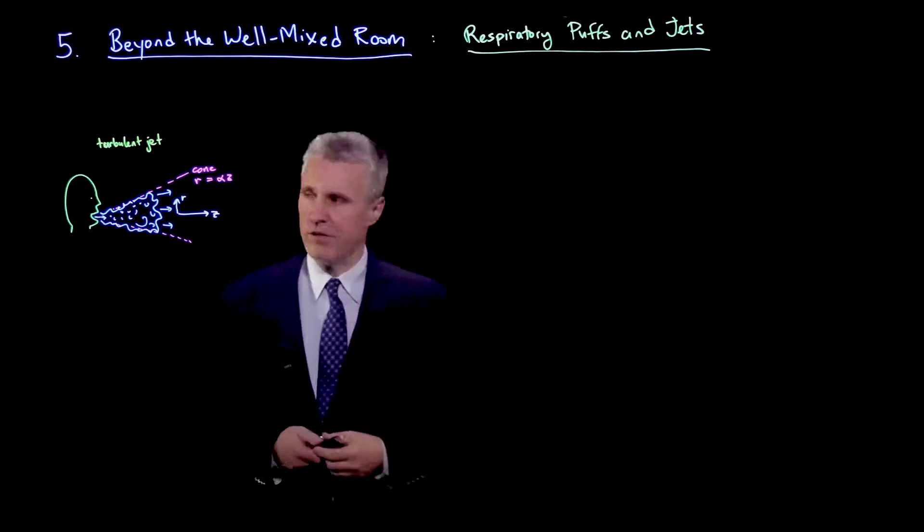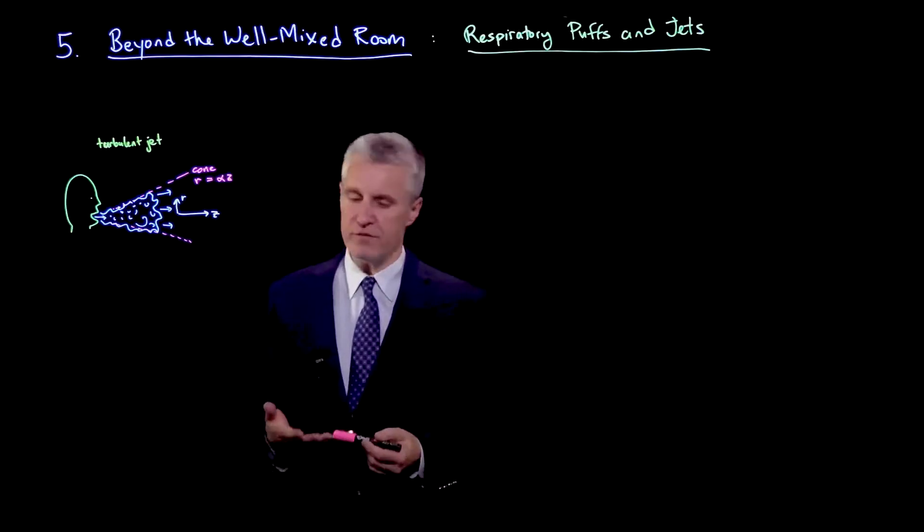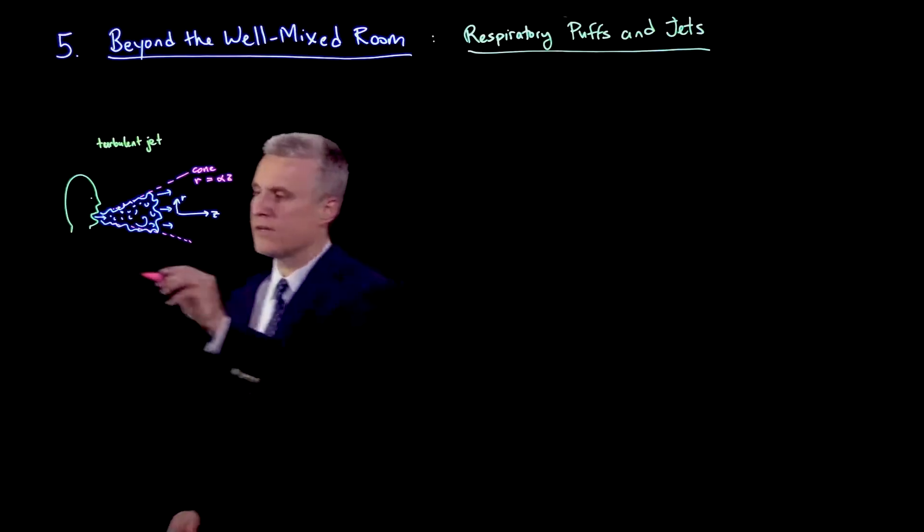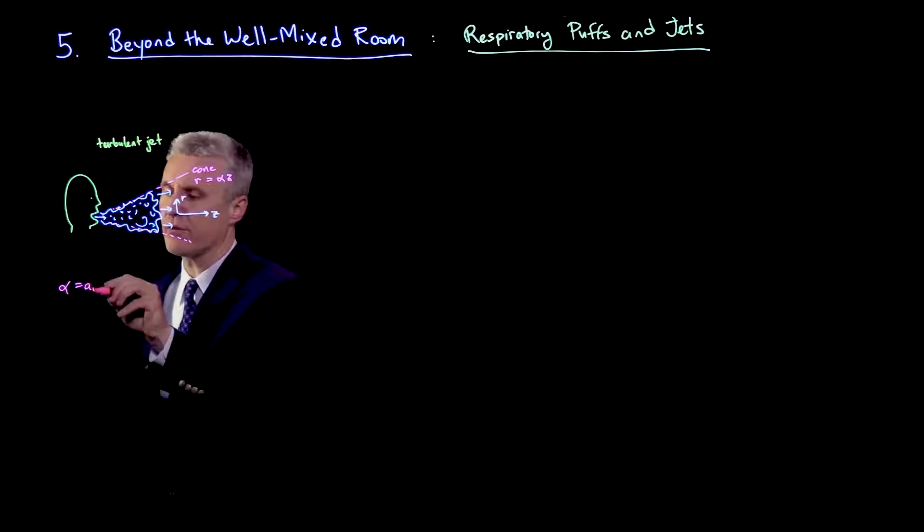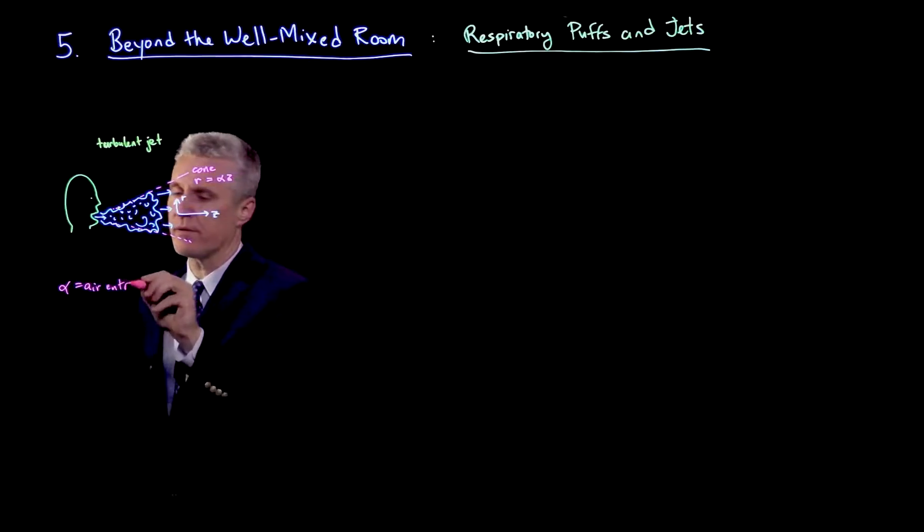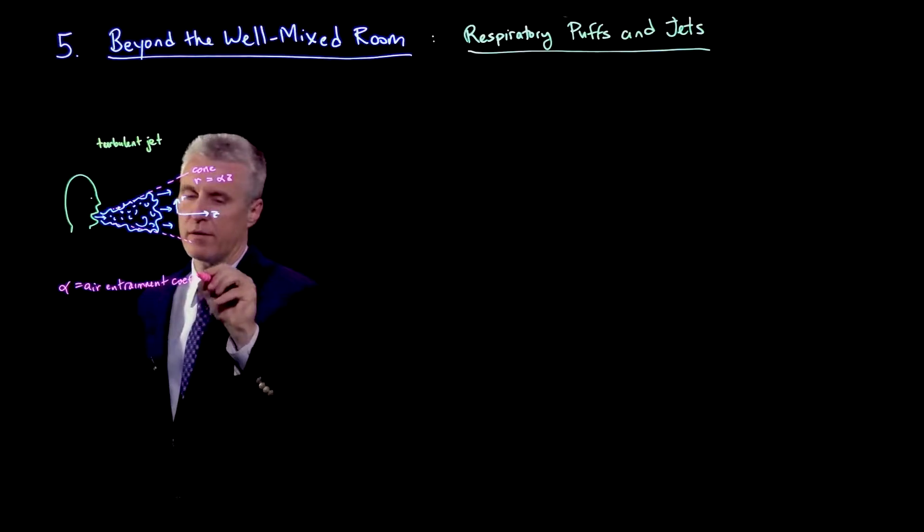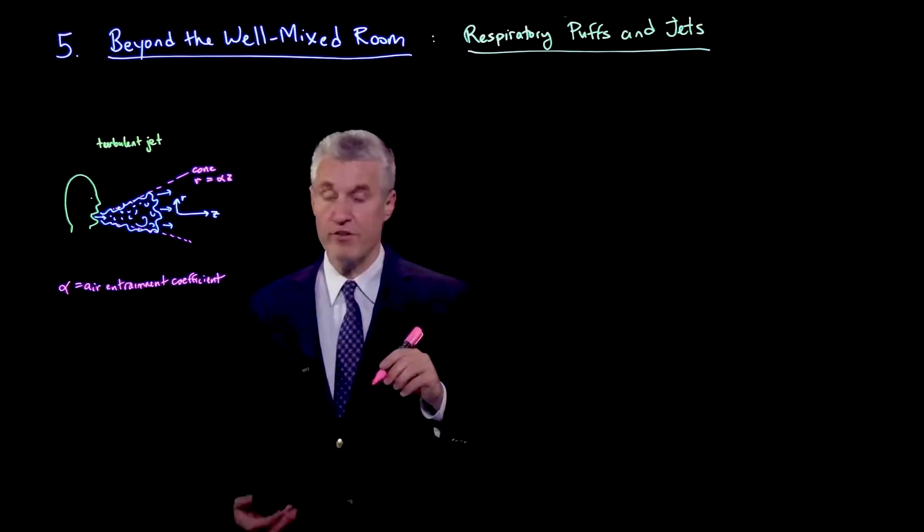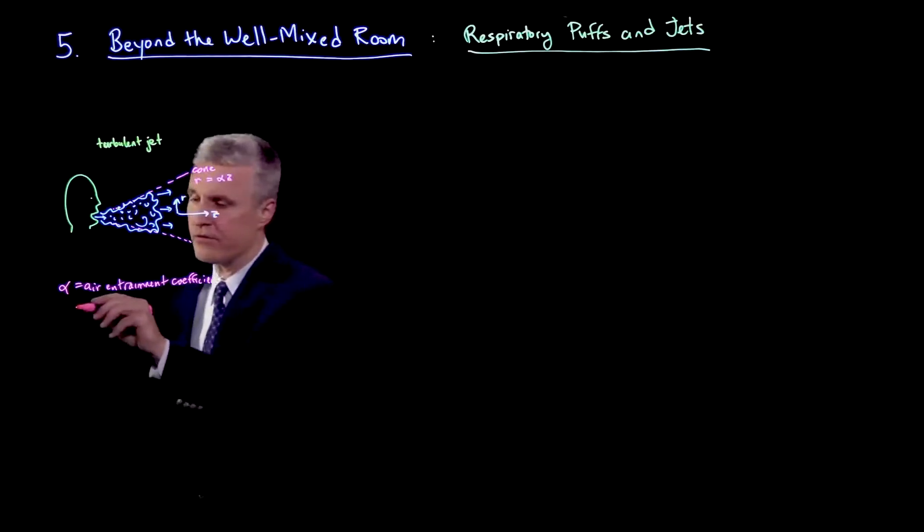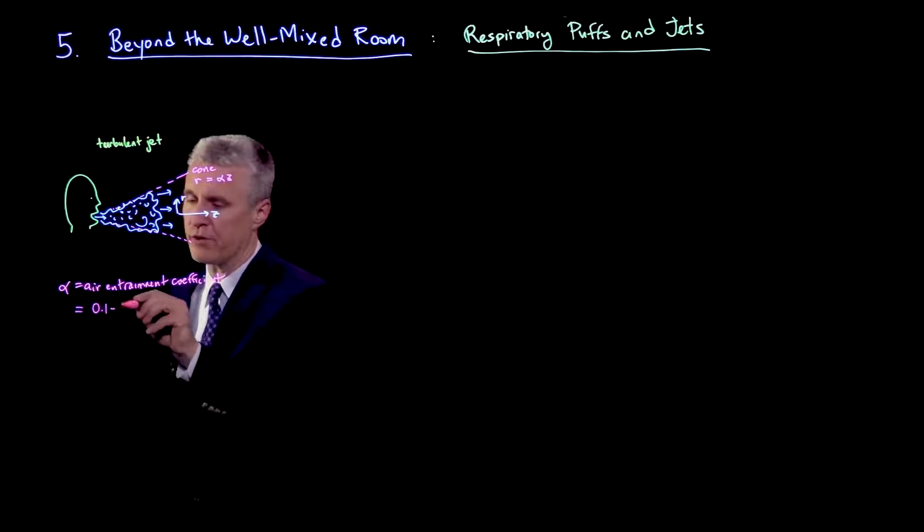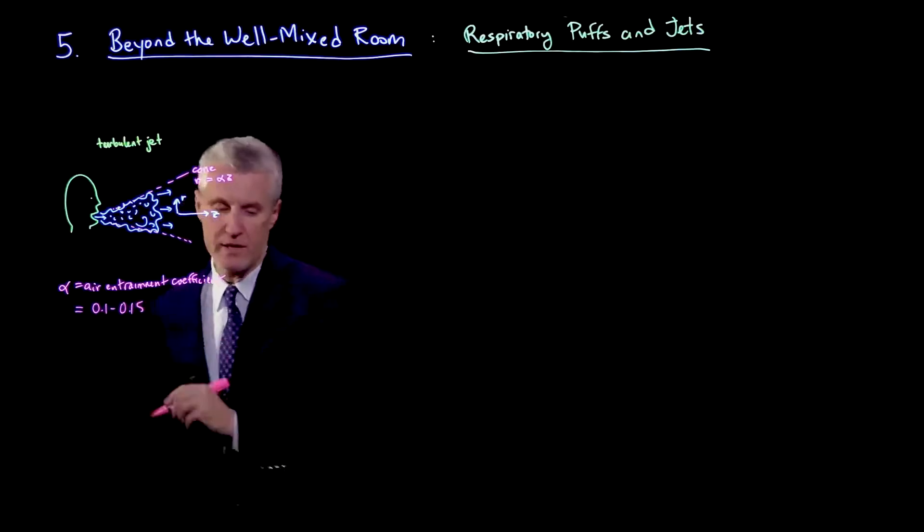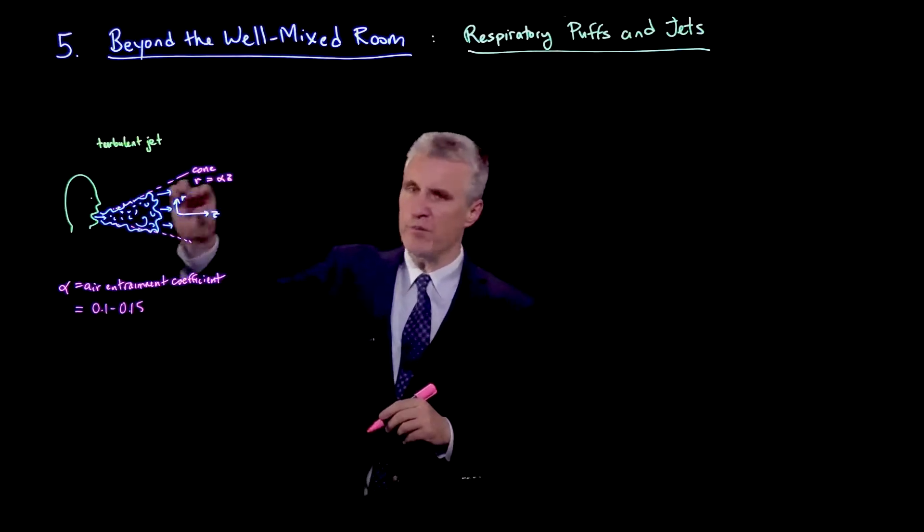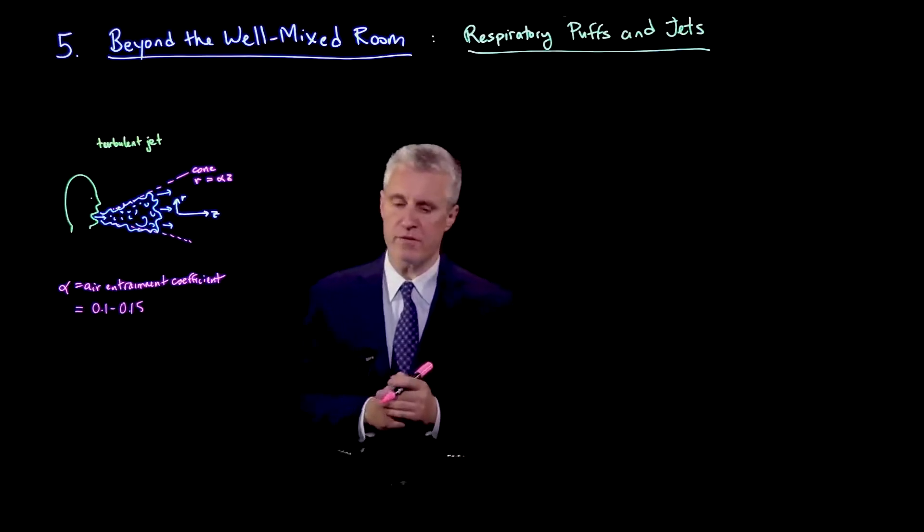The term alpha also has a physical interpretation as the air entrainment coefficient. And for respiratory jets in the air, this coefficient is usually around 0.1 to 0.15. So that gives you basically the opening angle of the cone.